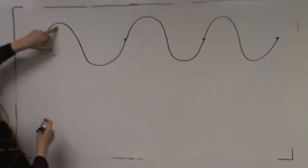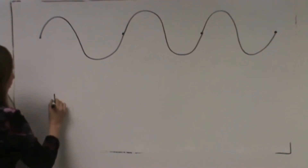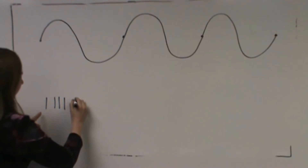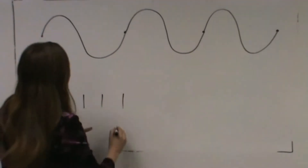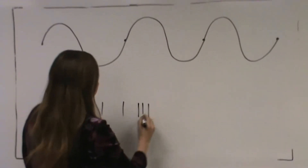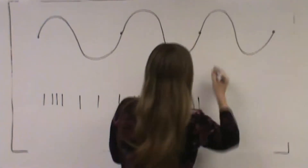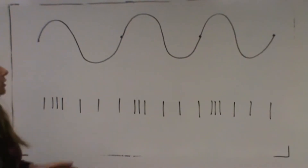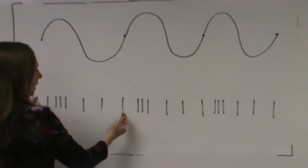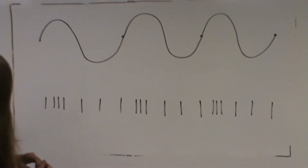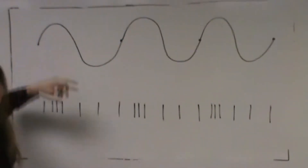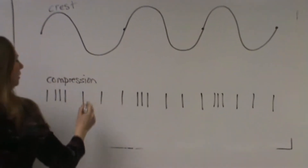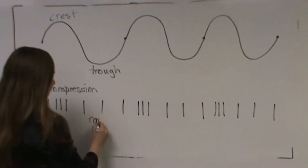Let's have the crest of the transverse wave correspond to the compression of the longitudinal wave. So the longitudinal wave is pressed together here and more spread out here, and pressed together here and more spread out here. So both our transverse wave and our longitudinal wave have approximately three wavelengths. Here's the crest corresponding to the compression, and here's the trough corresponding to the rarefaction.